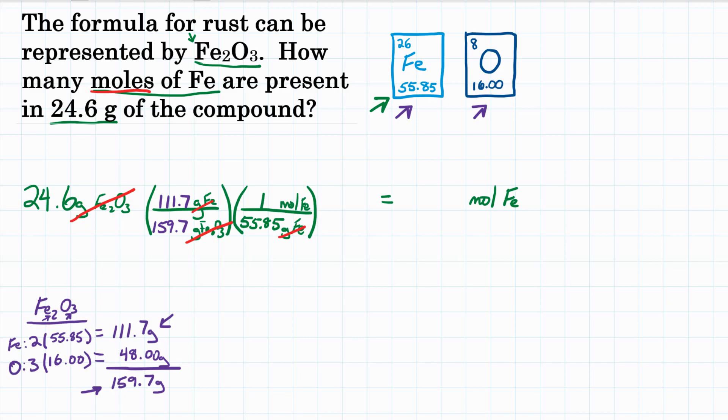So doing our math here, we would do in our calculator 24.6 times 111.7 divided by 159.7 times one, but that doesn't change it, so then just divided by 55.85, equals 0.308 right around there. So in the end, 24.6 grams of iron oxide, how many moles of only iron would that be? 0.308.